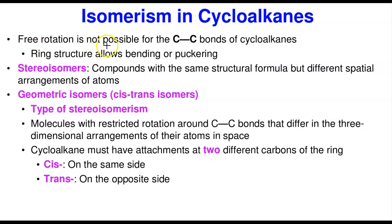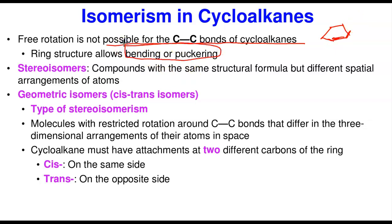In cycloalkanes, free rotation is not possible because of the cyclic ring. Instead, the ring can only bend or pucker slightly. Stereoisomerism is the existence of compounds with the same structural formula but different arrangement of atoms in space — a spatial arrangement. Different spatial arrangements produce molecules that are different from each other.